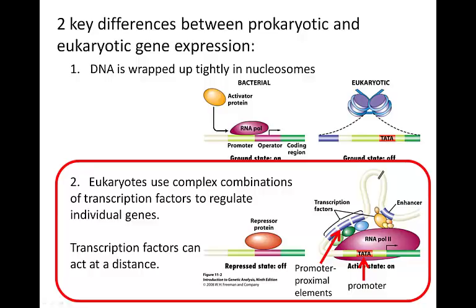This video will be on the second key difference between prokaryotic and eukaryotic gene regulation: eukaryotes tend to use very complex combinations of transcription factors to regulate individual genes. This is in comparison to prokaryotes, which have simple systems — maybe one repressor, one transcriptional activator.